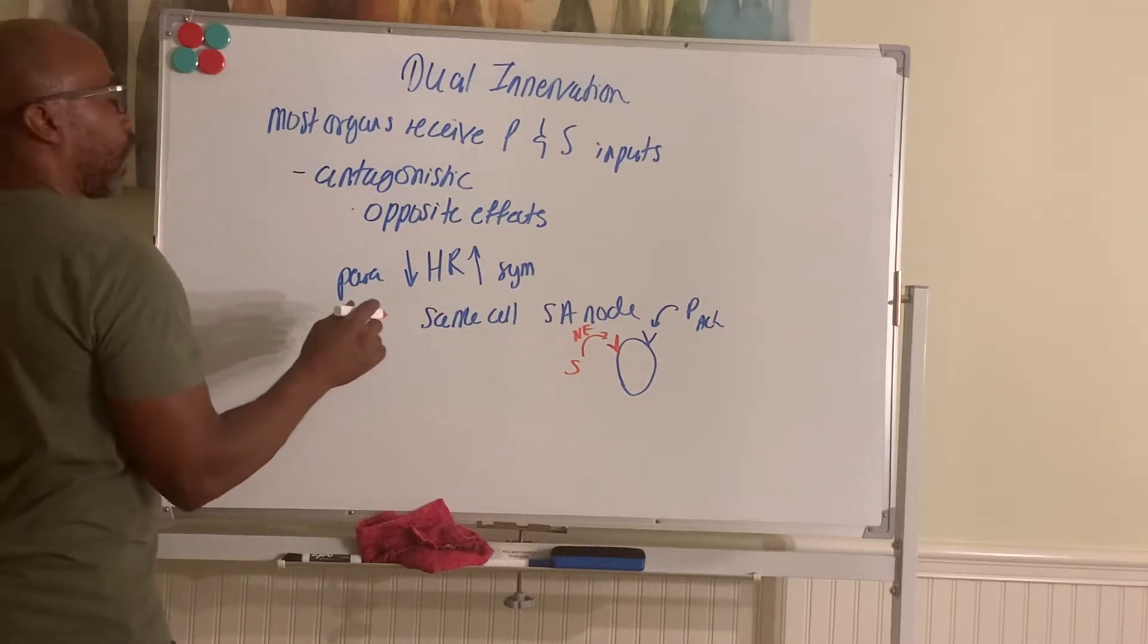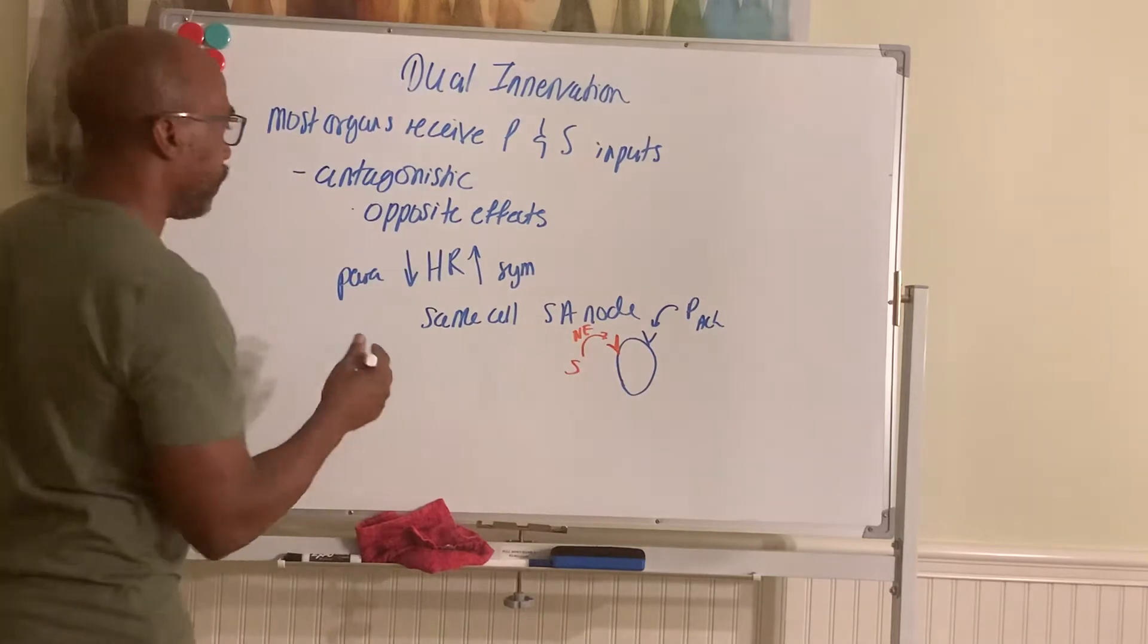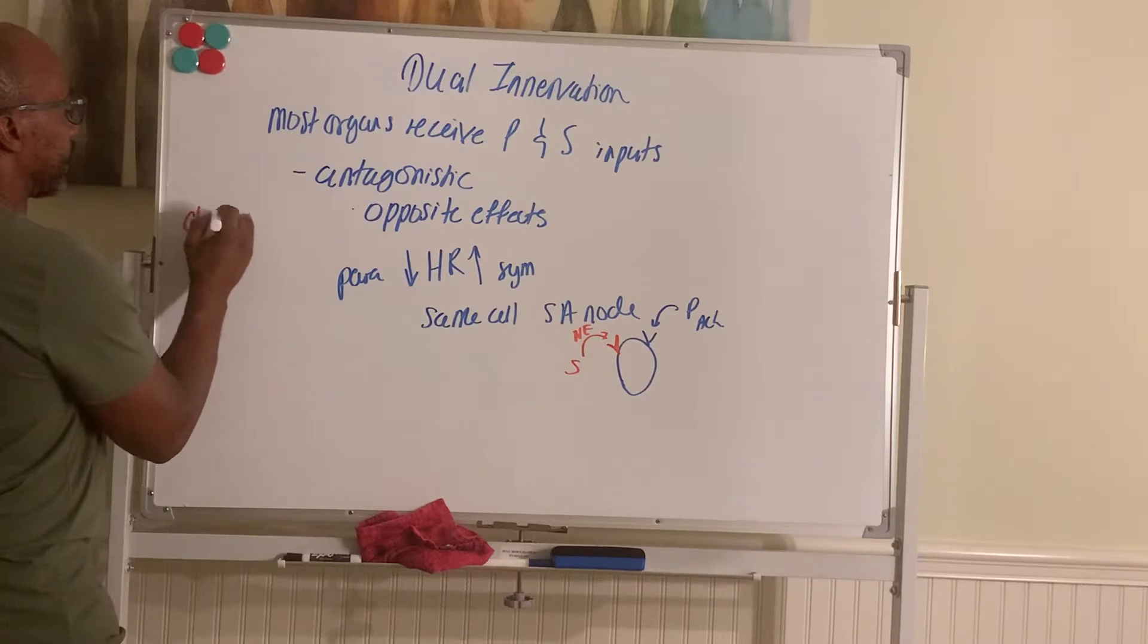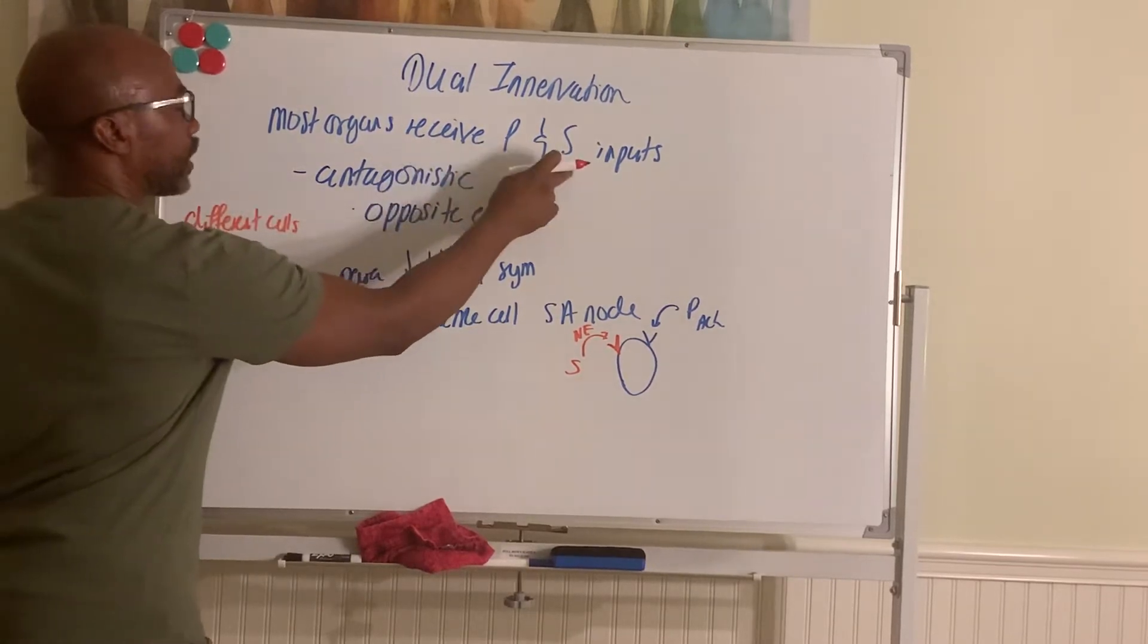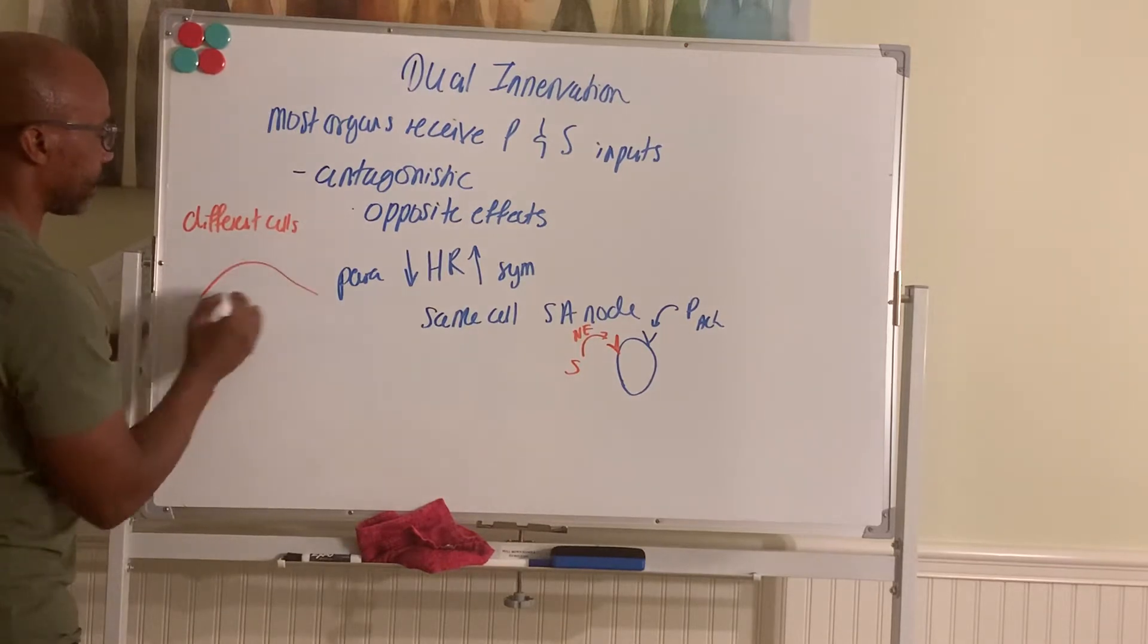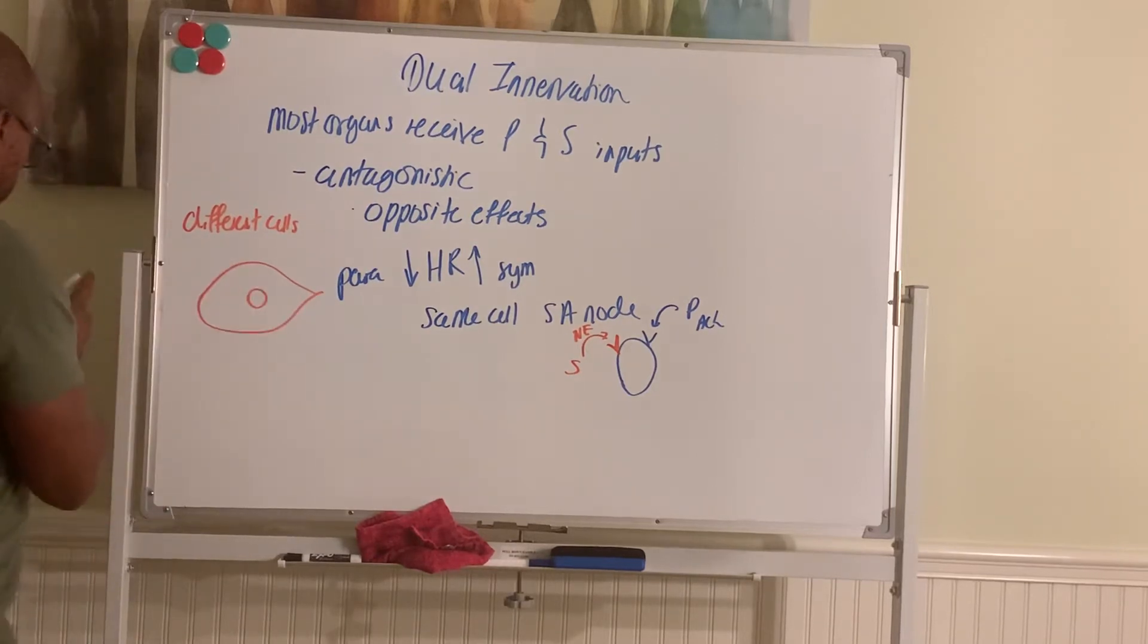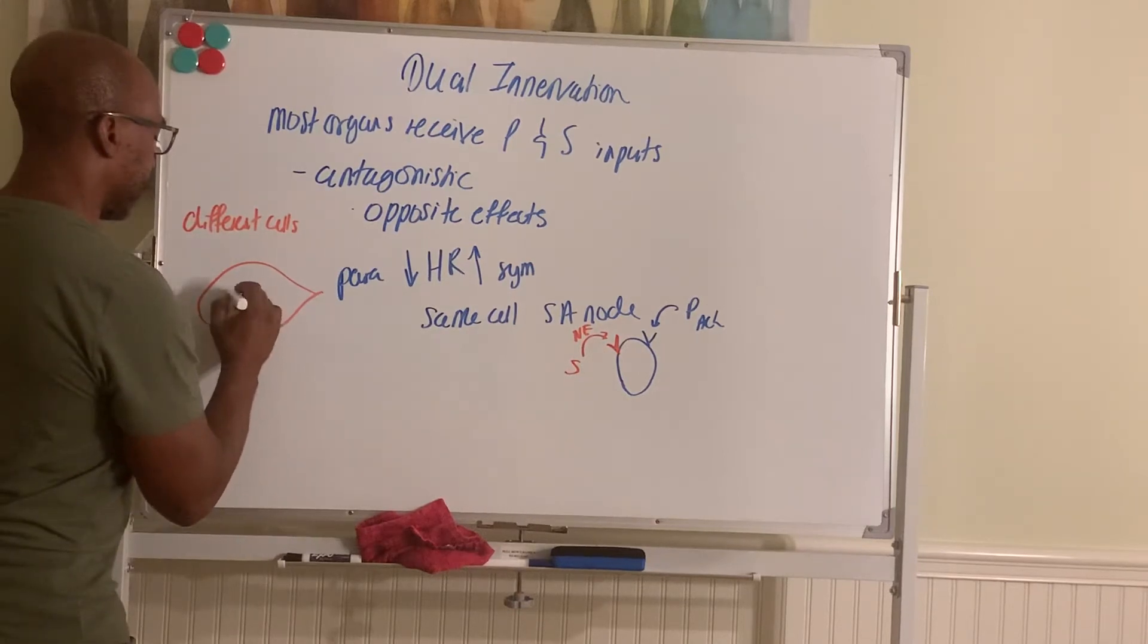Another example where we may use different cells in the same organ to have an effect would be your pupil. So using different cells, meaning each division targets a different cell in the same organ. For example, we use your eyes. This part is your pupil. And then the muscle around it is your iris.